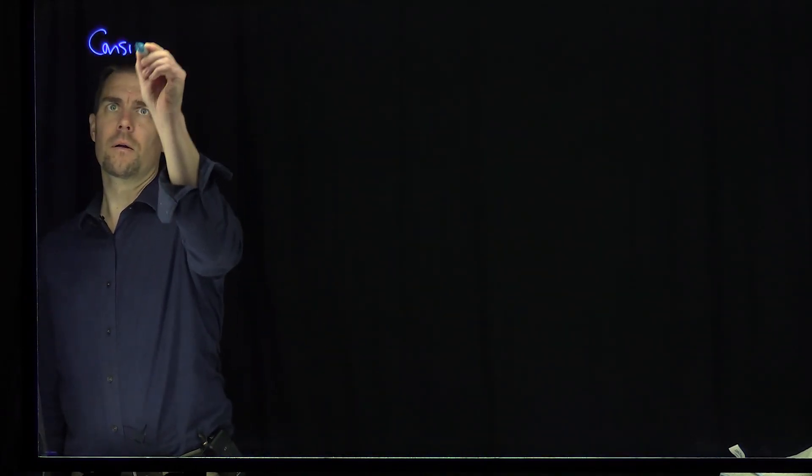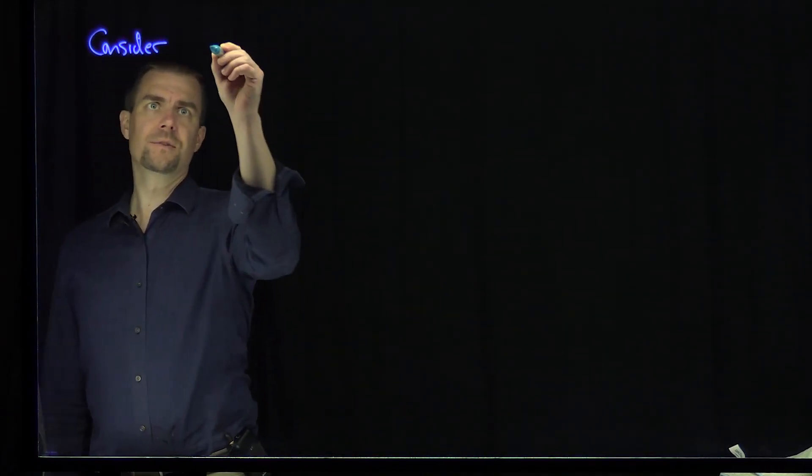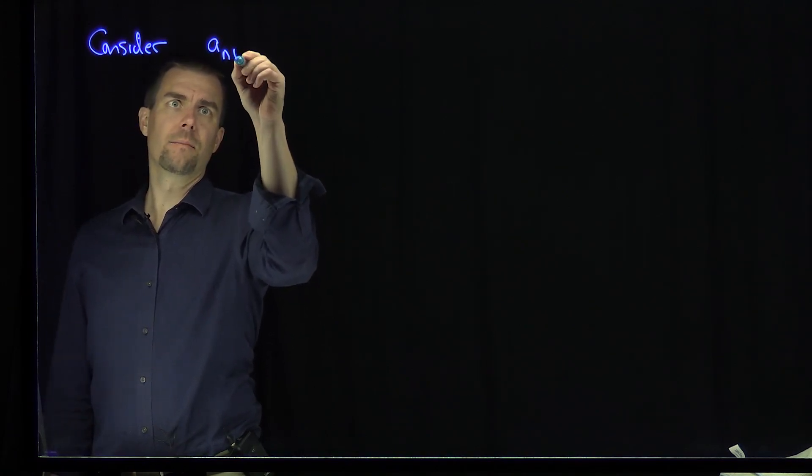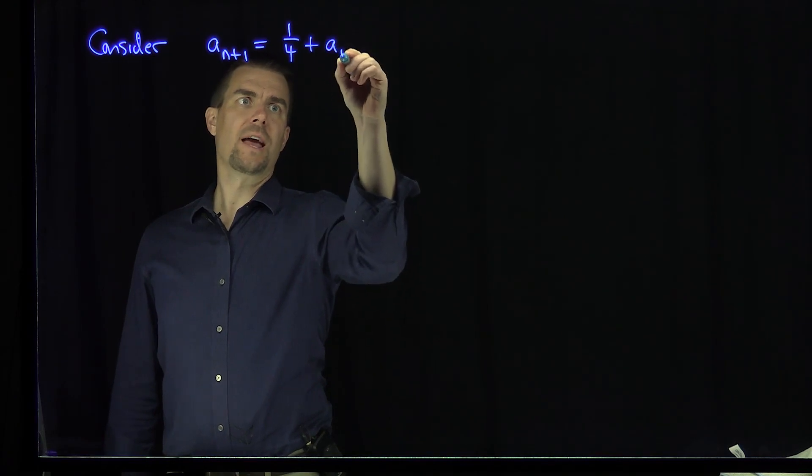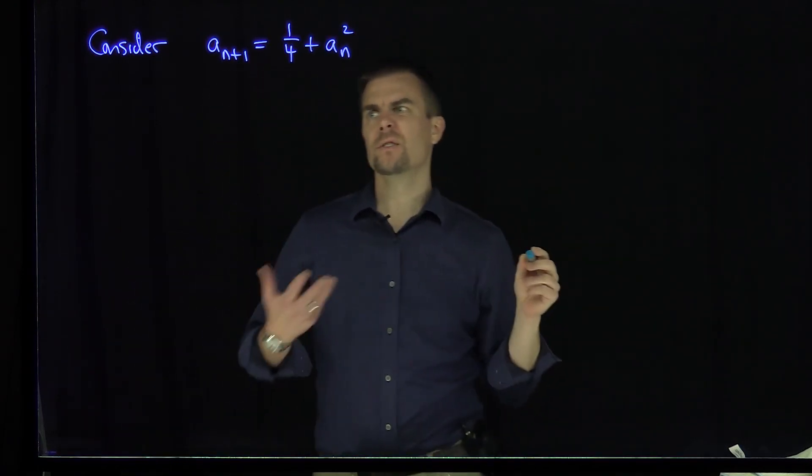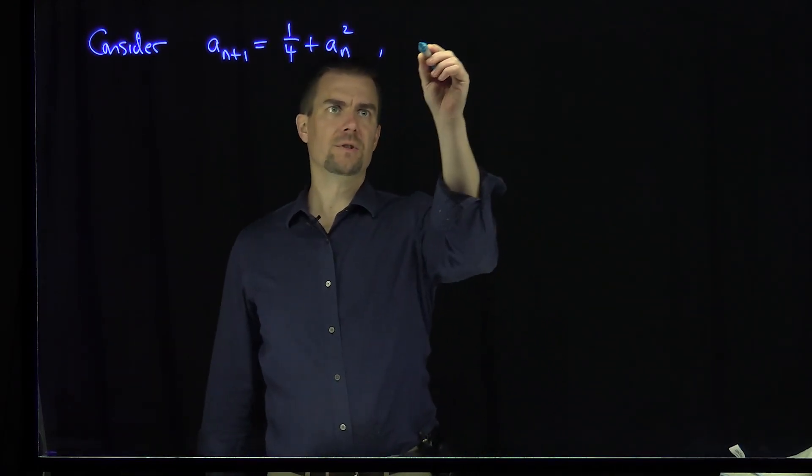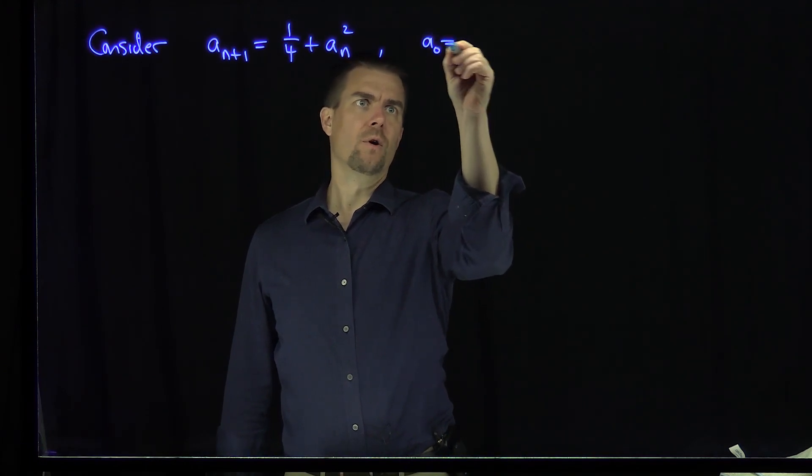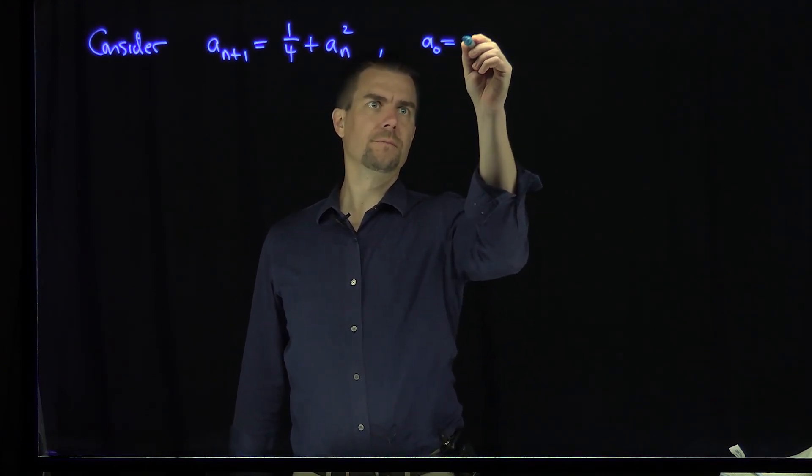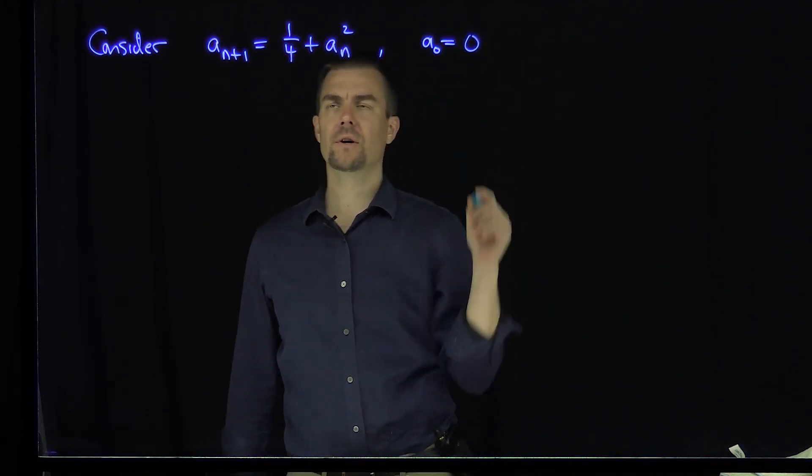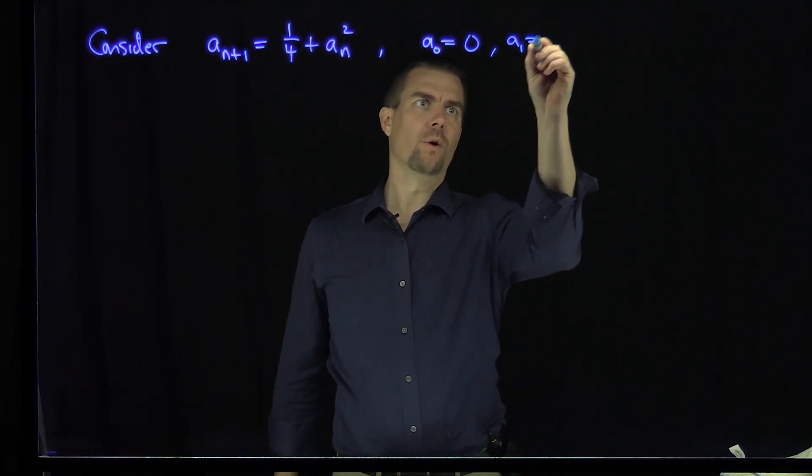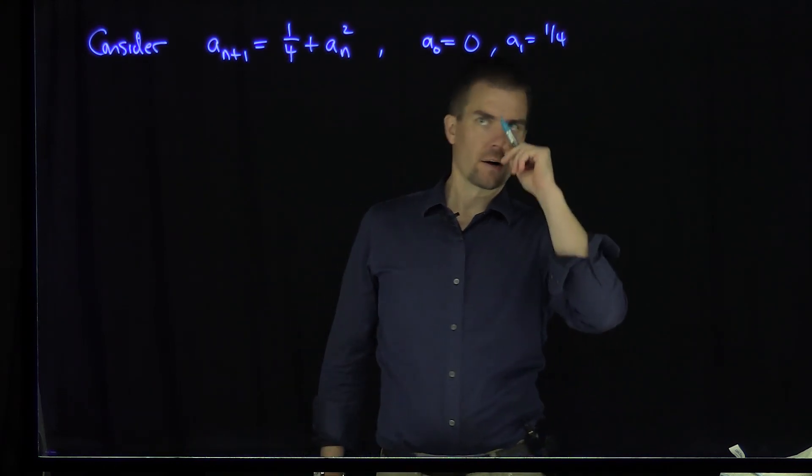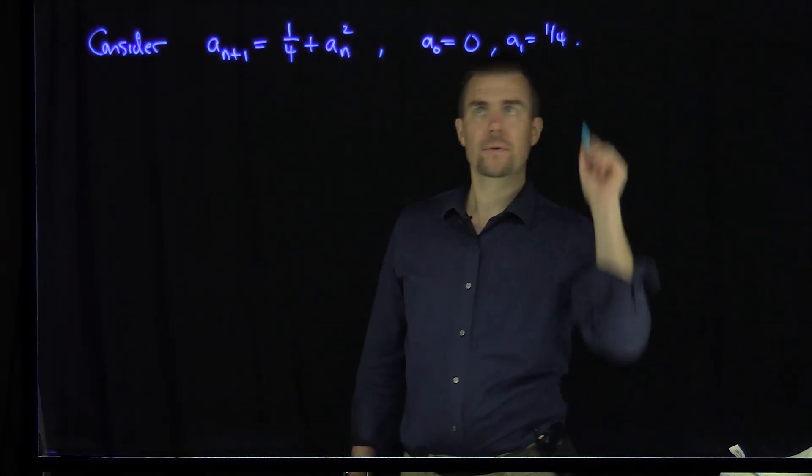Let's consider the sequence a_{n+1} = 1/4 + a_n^2. Let's assume that a_0, we can start the sequence off, the zeroth term will be equal to zero. And then of course, if a_0 is zero, then a_1 will be a quarter, for example. And there is our recursively defined sequence.